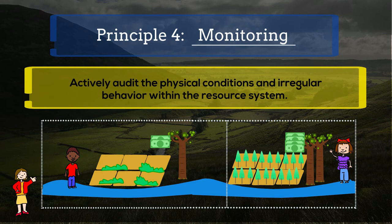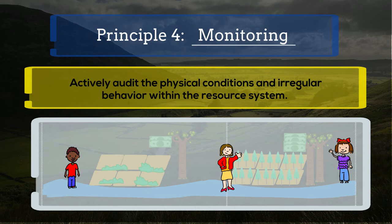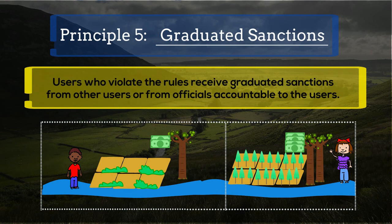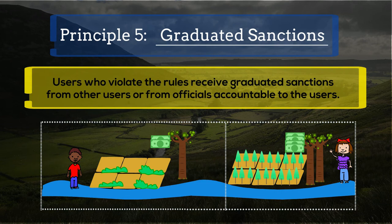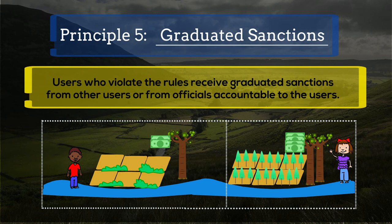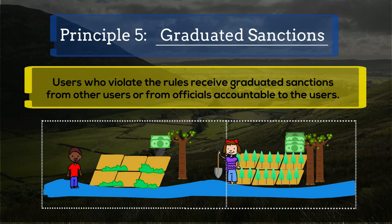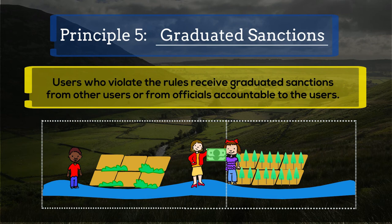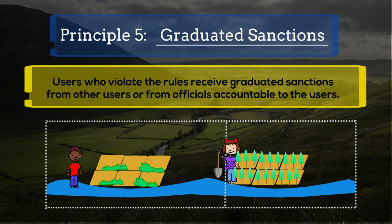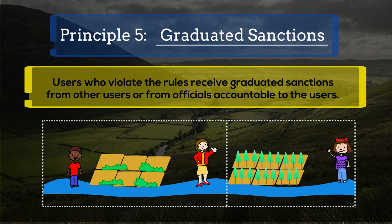Principle 5: Graduated sanctions. This principle deals with the question of what to do with the free riders or those who are not cooperating within the resource system. Ostrom found that many communities follow the strategy of graduated sanctions, where individuals who are using the resource more than they should, or who are not contributing towards the maintenance of the resource, are punished or charged a penalty depending on the severity of their offense. These punishments are kept low for the very first offense and gradually increase for every repeated offense. It is also important that those who devise the punishments are part of the community and accountable to the users of the system.